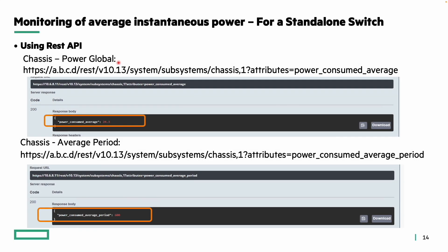Average power and power consumed average can also be monitored through the REST API under the context of system subsystems with the chassis. The attribute value power-consumed-average returns 24 watts for the 4100i, and power-consumed-average-period returns 600 seconds as configured.